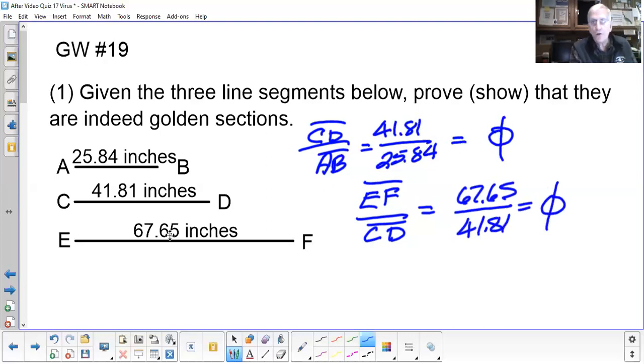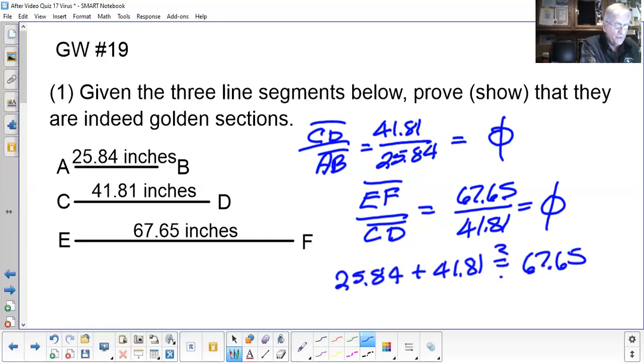And what is the third thing that has to be a characteristic of these three segments? The shorter one, 25.84, increased by the middle length one, 41.81, should give me 67.65. And if you do indeed add those together, you will find that you do get 67.65 for the left hand side of the sentence. So this checks out. These are definitely golden sections on the first problem of group work 19.